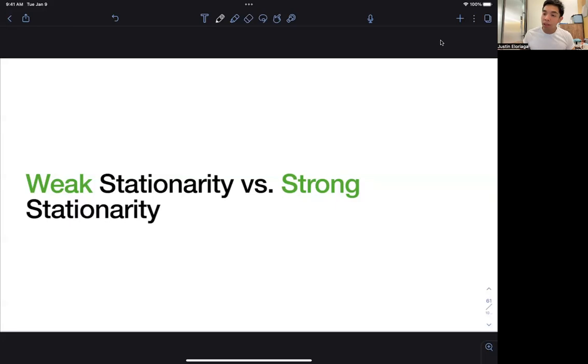While strong stationarity is the ideal thing, if you have an econometric model and you have a variable that's strictly stationary, it's quite easier to analyze this particular variable. But in general, the requirement for running most of the models is just weak stationarity. So let's elucidate the difference between the two.